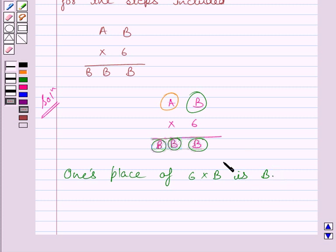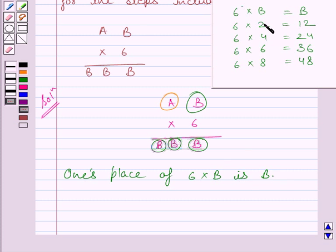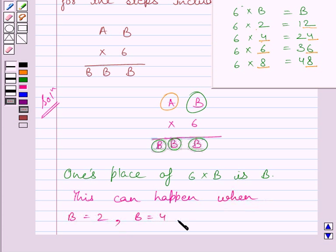Now this happens only if value of B is 2, 4, 6 or 8. Clearly you can see, when value of B is 2, then the units place of the product is also 2. When value of B is 4, then units place of the product is also 4. When value of B is 6, then units place of 6 multiplied by B is 6. When value of B is 8, then units place of 6 multiplied by B is 8. Now we can write, this can happen when B is equal to 2, B is equal to 4, B is equal to 6, or B is equal to 8.